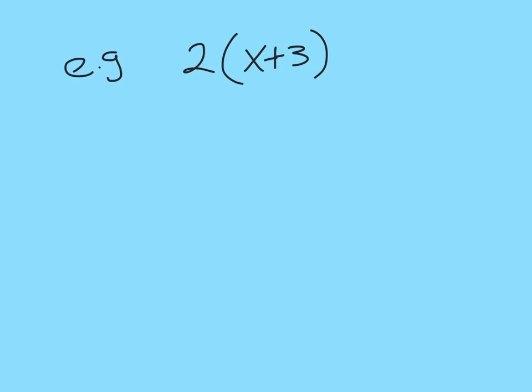So here we have 2 multiplied by x plus 3. So how do we go about doing that? Well, first of all, we multiply 2 by everything in the brackets. 2 by x plus 2 by 3. So we can split it up like that.